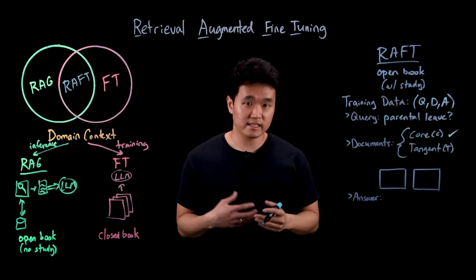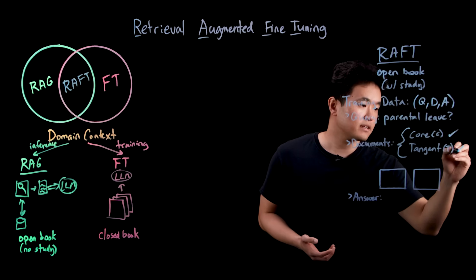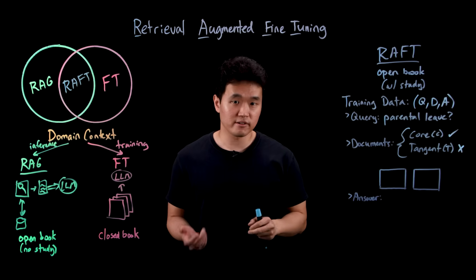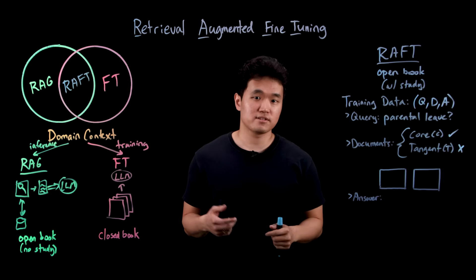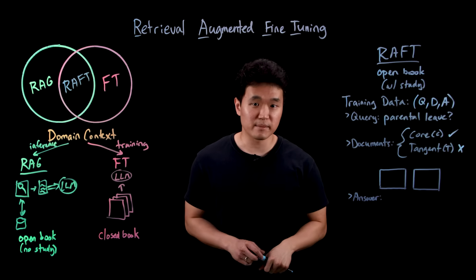Tangent documents, on the other hand, contain information that's irrelevant or off-topic to the user query. These could be documents on retirement accounts or internal code documentation.